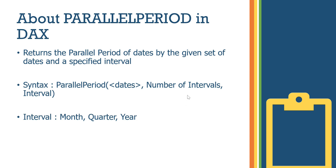The syntax for PARALLELPERIOD is: Dates (date column), Number of Intervals — for example plus one or minus one — and then Intervals, which can be month, quarter, or year, depending on our requirement.